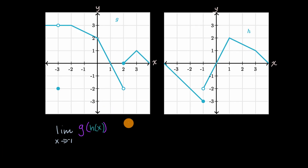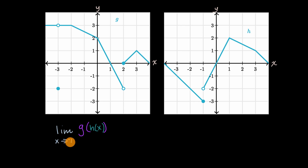Let's get a little more practice taking limits of composite functions. We want to figure out what is the limit as x approaches negative one of g of h of x. The function g is defined graphically on the left, and the function h is defined graphically on the right.